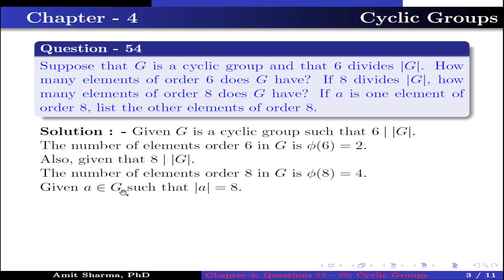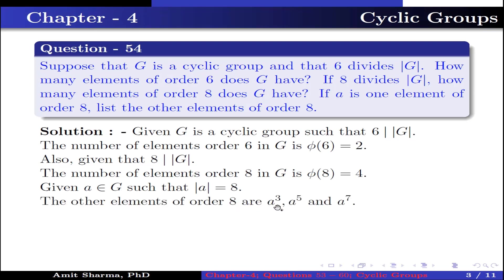Given A belongs to G such that the order of A is 8, the other elements of order 8 are A³, A⁵, and A⁷. This is because gcd(3,8), gcd(5,8), and gcd(7,8) are all equal to 1.